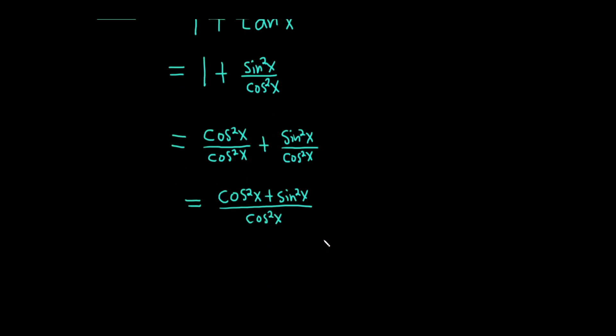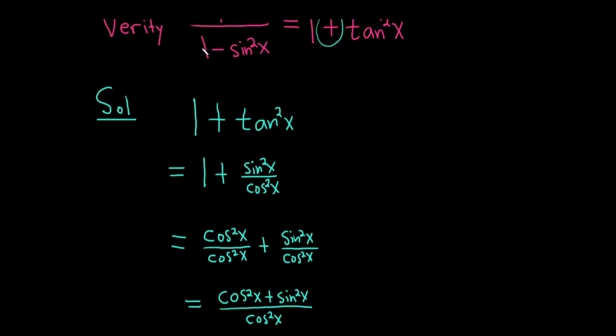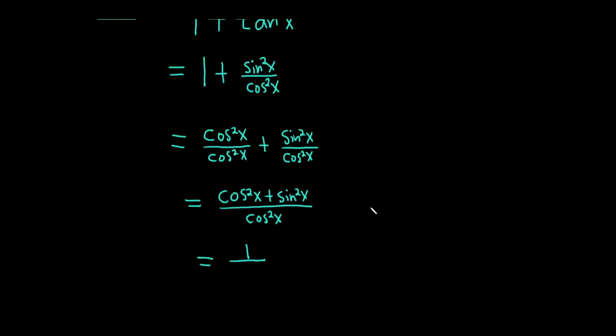And cosine squared plus sine squared is a famous identity. It's equal to 1. This is over cosine squared. But let's pause here for a moment. Where are we going? We're trying to get to 1 minus sine squared. Well, cosine squared is equal to 1 minus sine squared. And that completes the problem.